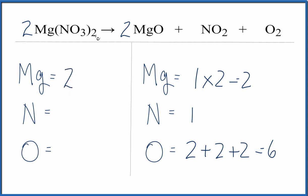And then we have two times the one nitrogen times the two, so we have four total nitrogens. For oxygens, two times three is six, and this two applies to everything, so two times six is twelve oxygens on the reactant side. We fixed the magnesiums, but now everything else is off balance.